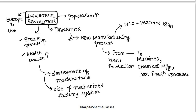Before the Industrial Revolution, traditional modes were used for manufacturing. People used to put in their labor and create things with their own hands. With the coming of the Industrial Revolution, new manufacturing processes emerged because machines were invented. Hand production decreased, machines increased, chemical manufacturing increased, and iron production processes increased. This Industrial Revolution happened somewhere around 1760 to 1840, starting in England and spreading throughout Europe and the United States.